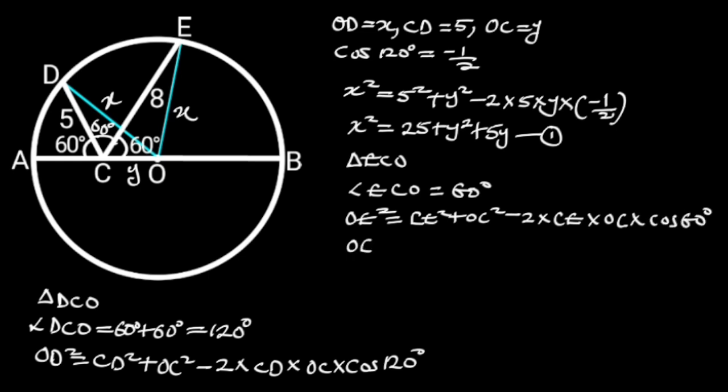OE is equal to X. CE is equal to 8. OC is equal to Y. And cos 60 degrees is equal to 1 over 2.